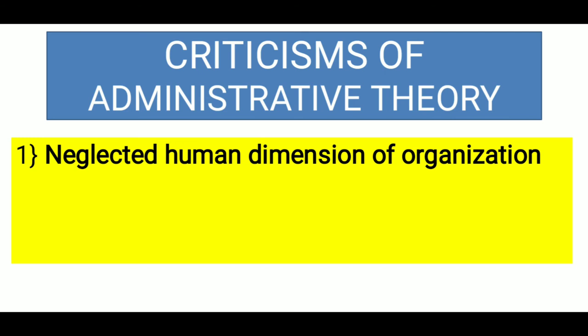First important criticism: it neglected the human dimension of organization. Classical theory जितने भी theories हैं, वो सभी में two important aspects को focus किया गया है: structural aspect and mechanical aspect of organization. Classical theory organization को एक machine मानता है, और जितने भी individuals वहाँ काम करते हैं वो machine की तरह treat होते हैं। Human dimension of organization को neglect किया गया है — human beings की psychology, उनका self satisfaction यहाँ focus नहीं किया गया है।